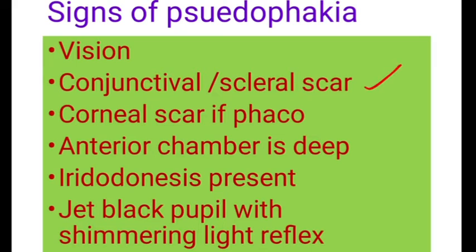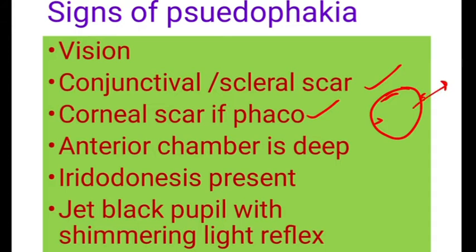Definitely you will see some amount of conjunctival scar or the scleral scar if SICS is done. You can also see the scar in the cornea if phacoemulsification is done — that is, a clear corneal incision at the entry site as well as the side port scars can be seen in the cornea. When you examine the anterior chamber, it is deep. Iridodonesis, that is, tremulousness of the iris, is present here also.